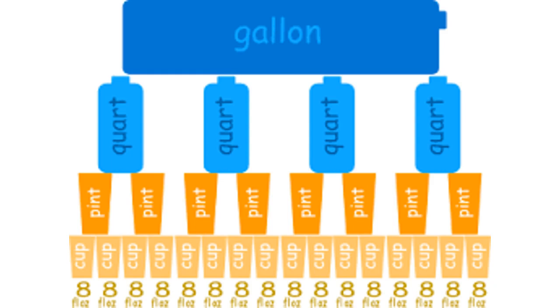An ounce is known to have several different meanings. This means that at some places this unit is used for the measurement of the weight of the items, where others may also use it to measure the volume of the liquid.